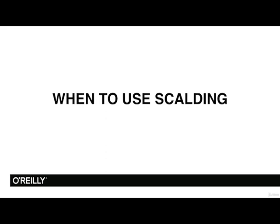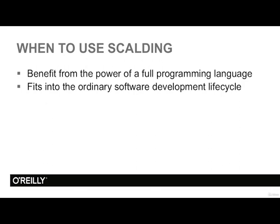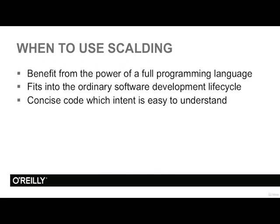In this video we will discuss when to use Scalding. The first reason is to benefit from the power of a full programming language, as opposed to Pig and Hive which are somewhat limited. Another reason is to fit into the ordinary software development lifecycle — test-driven development, continuous integration, all the usual things. The code written with Scalding is short and easy to understand; the intent of the program is easy to deduce from the code. Sometimes organizations start with Hive and Pig and recognize they don't have all the support needed for more complex big data programs, for example machine learning algorithms that require iteration, which is very difficult to do in Hive or Pig.